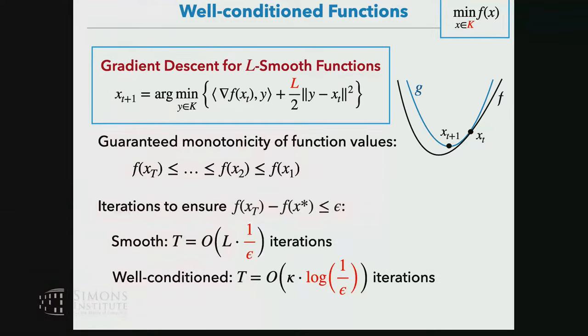What can we say about gradient descent for well-conditioned functions? The first thing is that we don't have to change the algorithm — we can just use the smooth gradient descent algorithm with step sizes given by the smoothness. If we have a well-conditioned problem, our convergence guarantee actually improves dramatically. Before it was O(1/ε) — a polynomial dependency on the accuracy. But if we have a well-conditioned problem, that improves exponentially to just O(log(1/ε)), which is significantly better and allows extremely accurate solutions very efficiently.